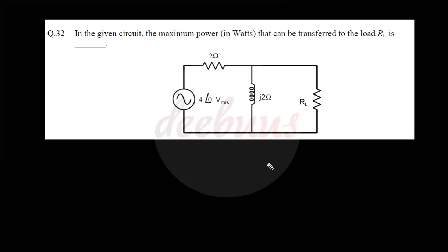Moving to another two-mark question: in the circuit shown, find the maximum power in watts that can be transferred to the load R_L. This is a typical question to evaluate how well you know the theory. Note that the load resistance is resistive, not complex — for a resistive load the approach is different from a complex load. We must first evaluate the Thevenin voltage and Thevenin resistance.